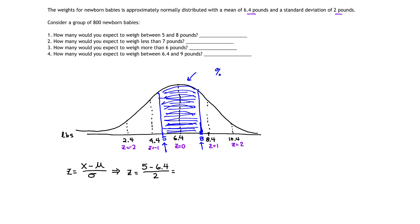If we take 5 minus 6.4, we should get negative 1.4. 5 minus 6.4 is negative 1.4, and if we divide negative 1.4 by 2, that tells me that the z-score is negative 0.7. So the z-score that corresponds to 5 pounds is z equals negative 0.7.